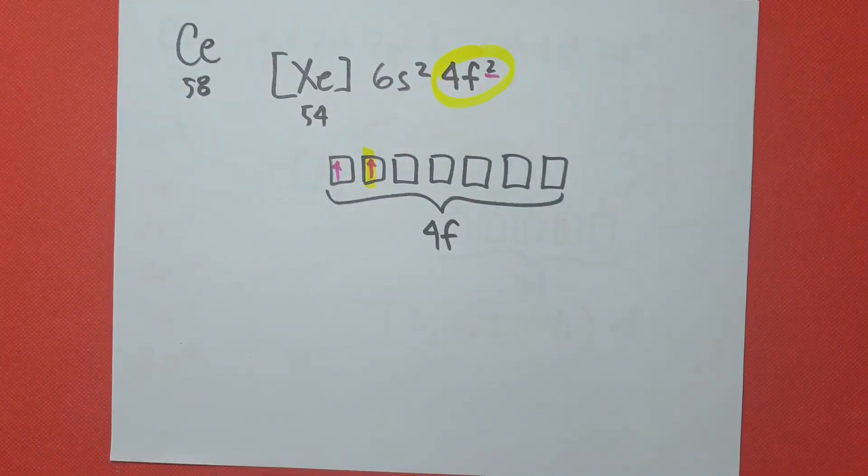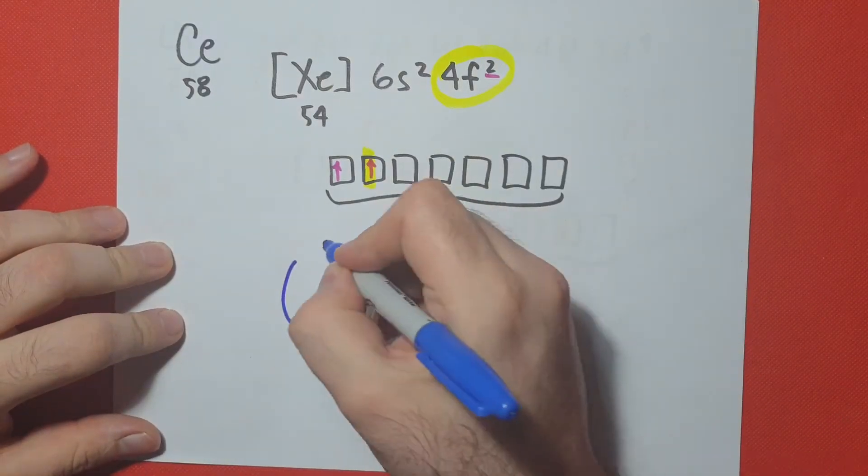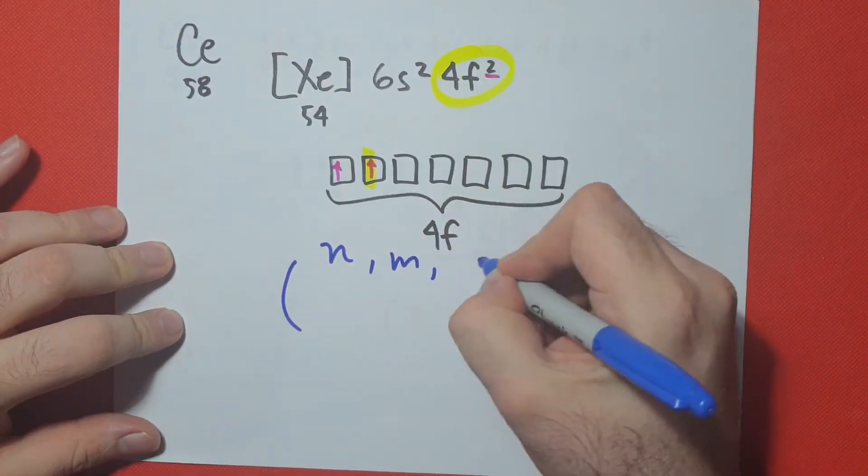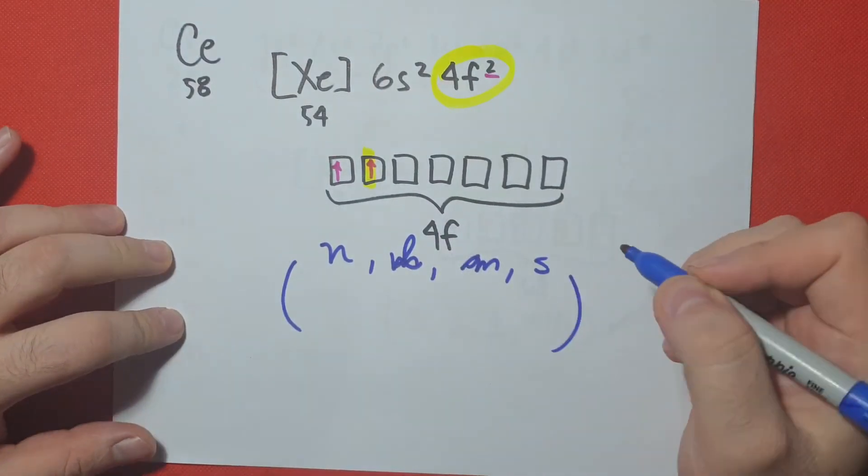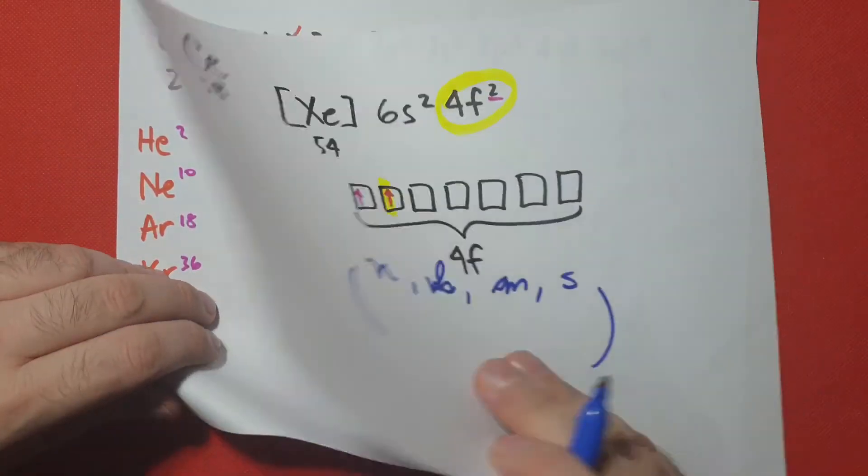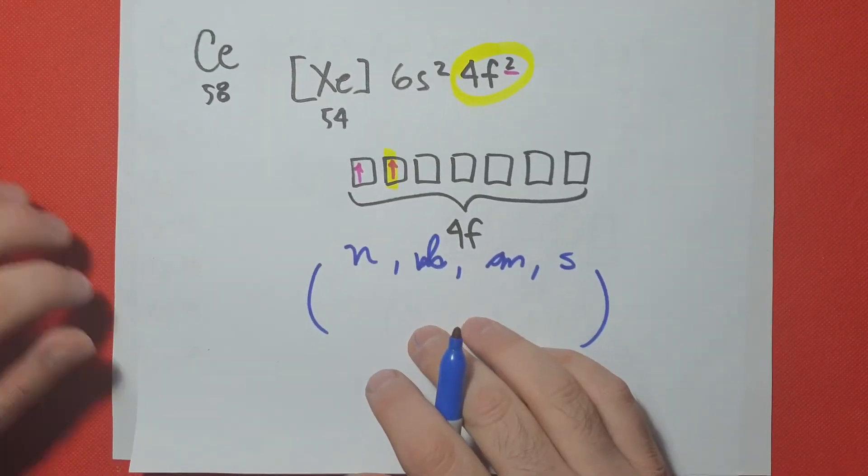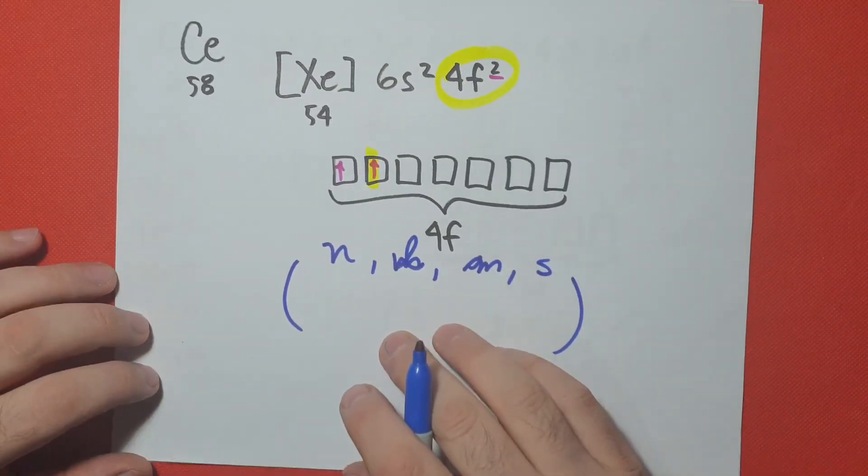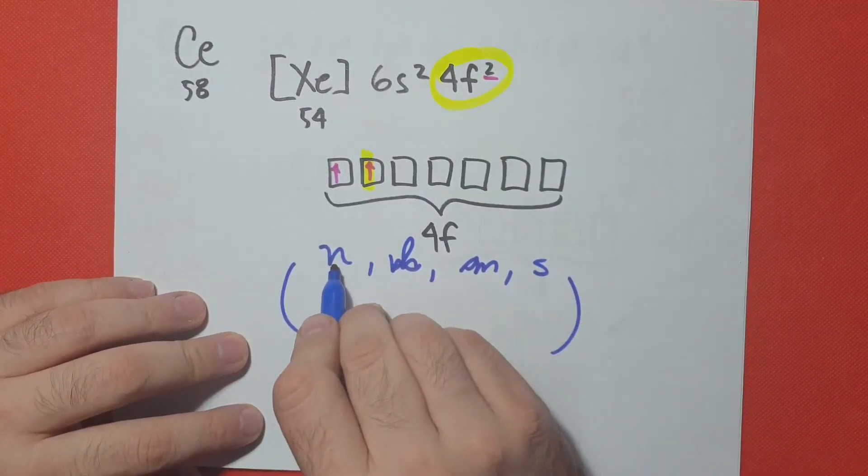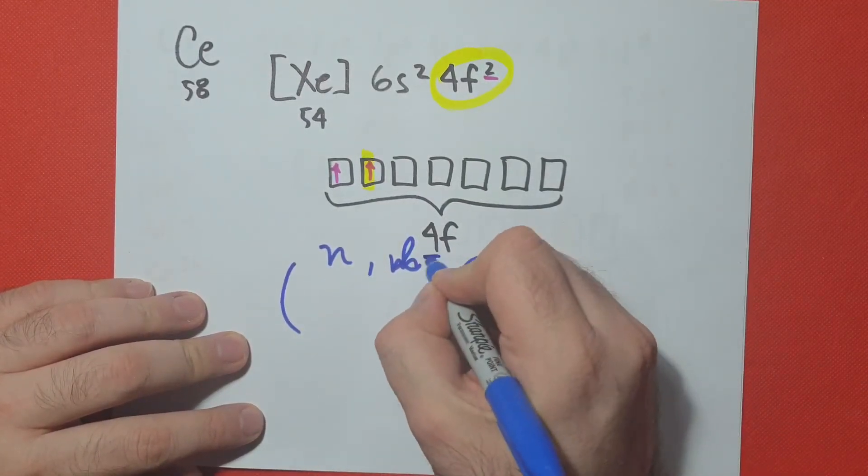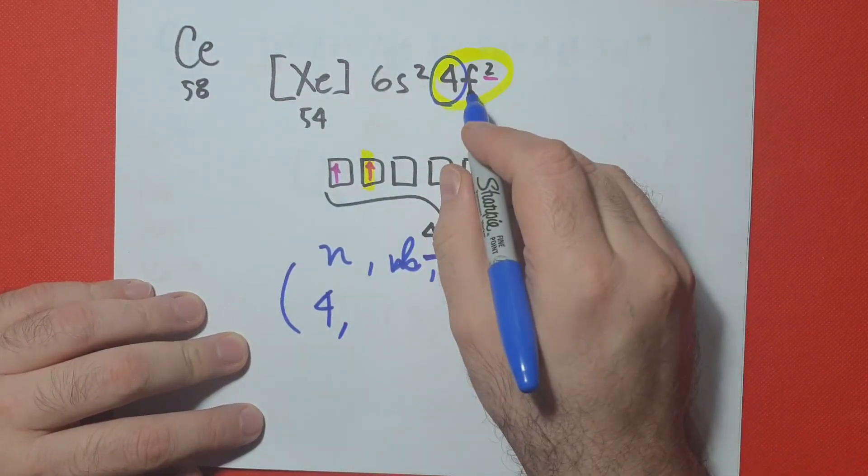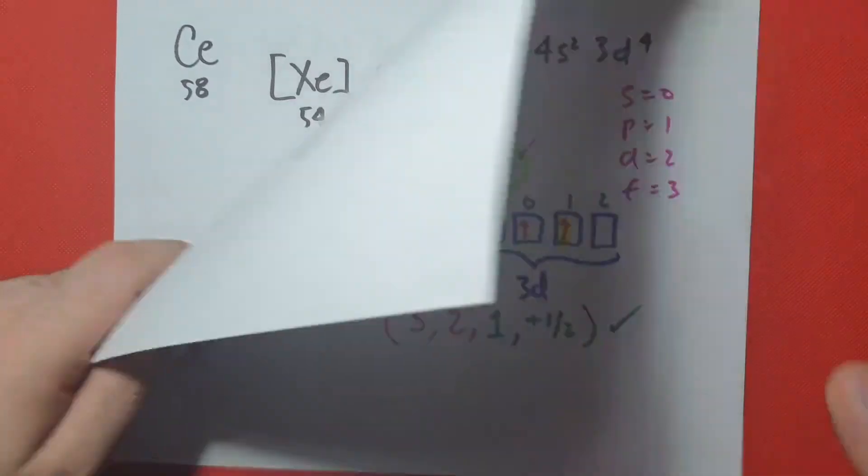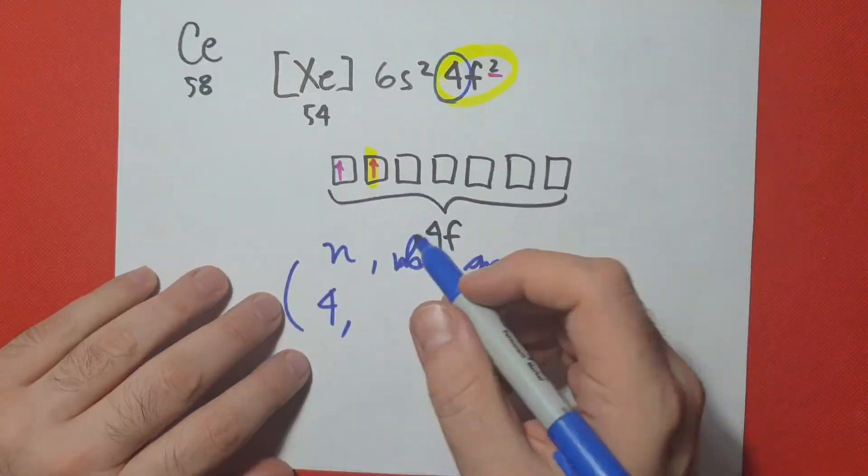So when we look and we want to make our set of quantum numbers, we're going to go ahead and write, remember, N, L, M, S. Our N is the same as the number of our orbital, which is 4. L is the shape. And remember, S, P, D, F, 0, 1, 2, 3. So this is number 3.